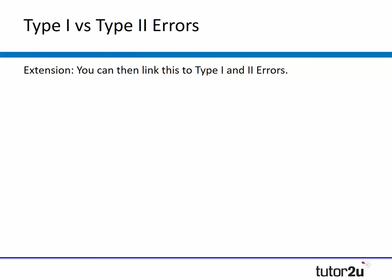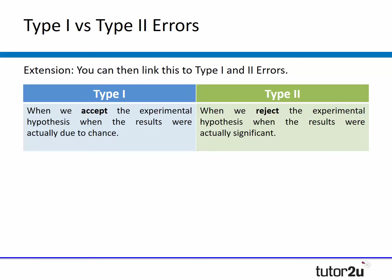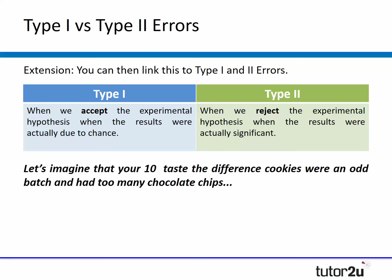As an extension activity, make students aware of the distinction between Type 1 and Type 2 errors. A Type 1 error is where we accept the experimental hypothesis when results are actually due to chance. Type 2 is the opposite: rejecting the experimental hypothesis when results are actually significant. For example, if those 10 Taste the Difference cookies were an odd batch with way too many chips — and usually they don't — we may have made a Type 1 error by accepting the experimental hypothesis. There's around a 5% chance that would happen.